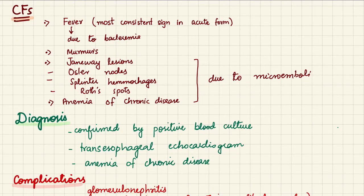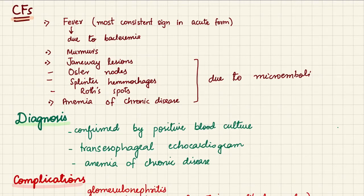The clinical features of infective endocarditis include fever, which is the most consistent sign, especially in acute form due to bacteremia. In subacute form, bacteremia may not be detected as the process is more chronic and organisms are deeply situated in vegetation. Murmurs also occur because these lesions on the valves cause acute or chronic valve problems detectable on auscultation.